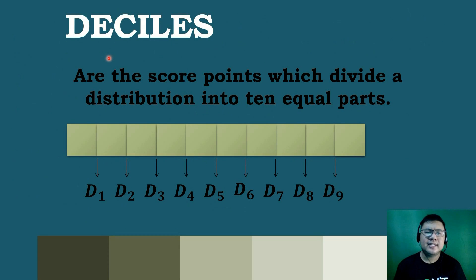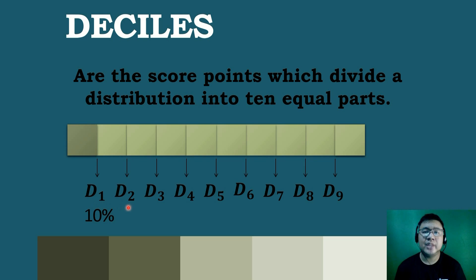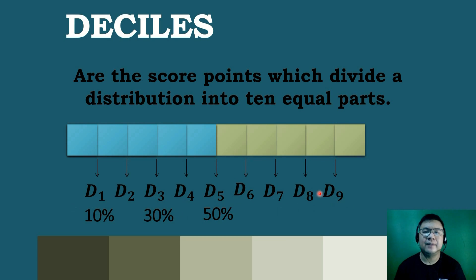Let's now look at deciles. Deciles are the score points which divide the distribution into 10 equal parts. Deciles determine the value for 10%, 20%, 30%, 40%, 50%, 60%, 70%, 80%, and 90% of the data. Using the definition of deciles, we can interpret the data.